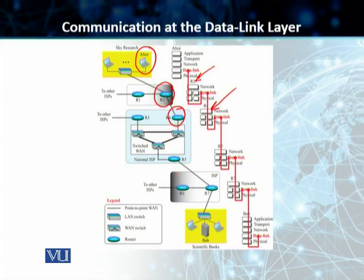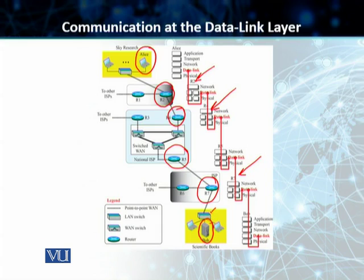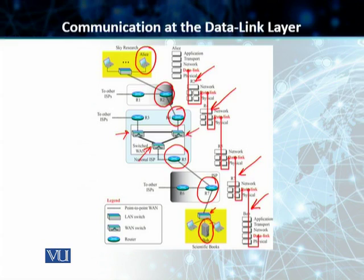R4 is part of a switched wide area network, so it talks to router R5. R5 then talks to router R7. Finally, router R7 talks to the data link layer of Bob's computer via the default gateway connected to router R7. There are quite a few switches that exist between this communication path, but for the sake of simplicity, because the state of the data is not changed at the switches, we have not included them in this example.